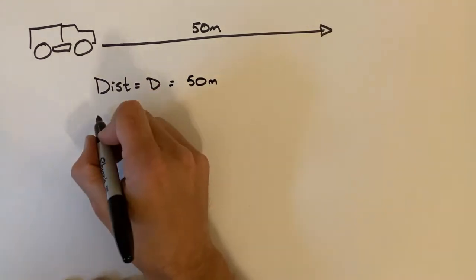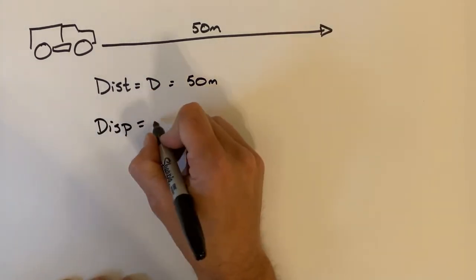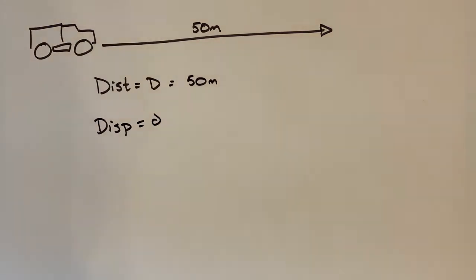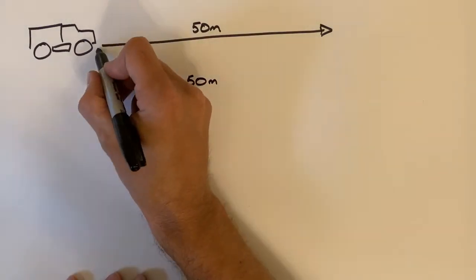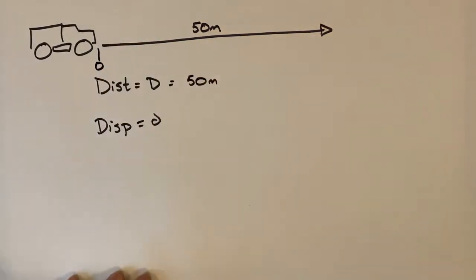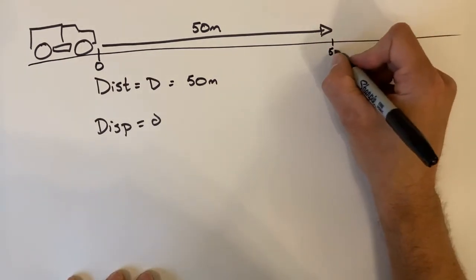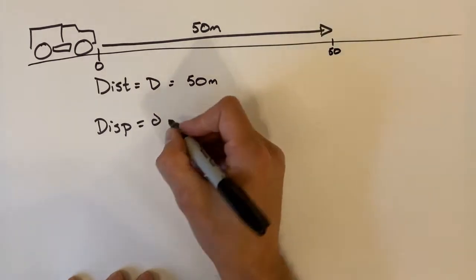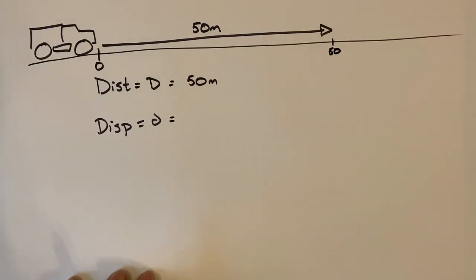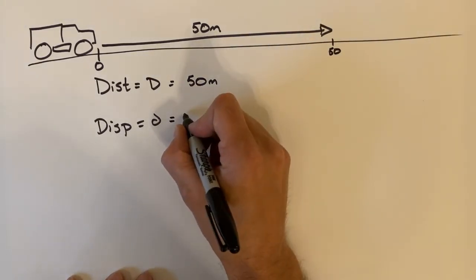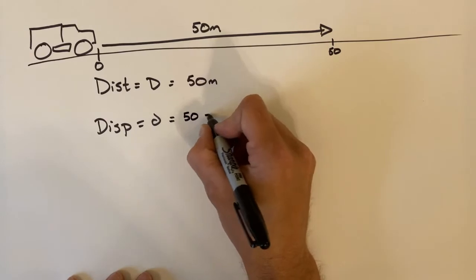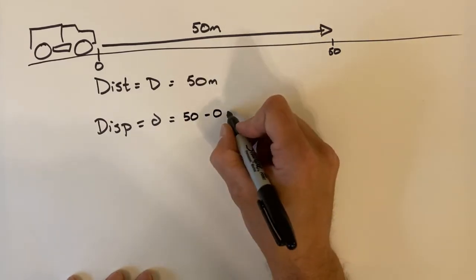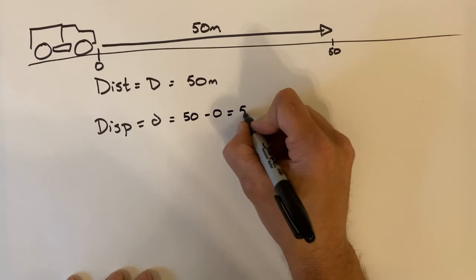Now if we want to look at displacement, we need to know the initial and final positions of this truck. So let's go through and let's say this is a position of zero. And let's treat this road as though it's a great big number line in math class. That would make the final position 50. So when we look at displacement, which is change in position, our final position is going to be 50 minus our initial, that's zero, which gives us a displacement of 50 meters.